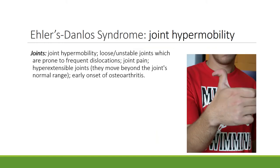Joint hypermobility is another symptom. It refers to loose or unstable joints that are prone to frequent dislocations and joint pain. Hyperextensible joints move beyond the joint's normal range, and in these individuals there is usually an early onset of osteoarthritis.